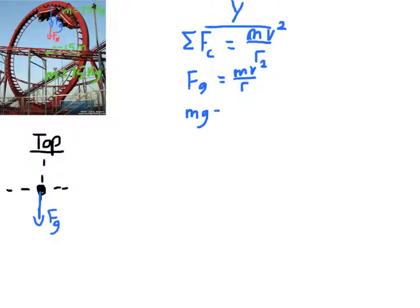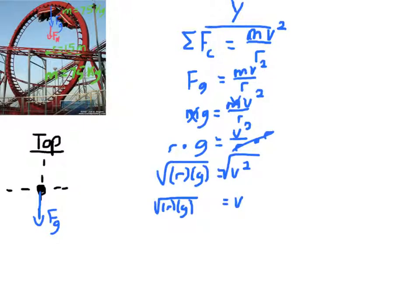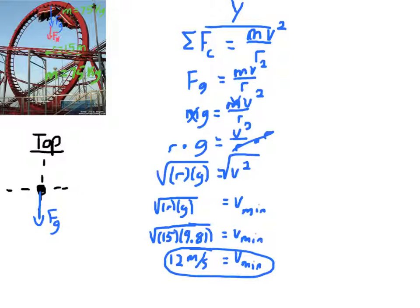I can substitute Fg for the centripetal force since it's the only force pointing into the circle. The force of gravity is mg, so mg equals mv²/r. The masses cancel, giving us that the acceleration of gravity equals v²/r — the centripetal acceleration. Solving for v, the minimum velocity at the very top is the square root of r times g, which for a radius of 15 meters comes out to 12.13, or about 12 meters per second.